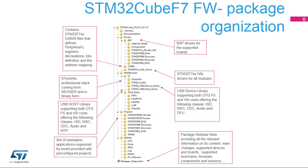It is organized in several main folders. The documentation folder contains the STM32CubeF7 getting started document, helping developers to quickly become familiar with the firmware package and its contents. The Drivers folder contains all the ST-developed drivers. CMSIS contains the files defining STM32F7-supported devices, peripheral register declarations, their associated bit definitions, and address mapping. The STM32F7xx HAL driver folder contains the drivers for all the peripherals.